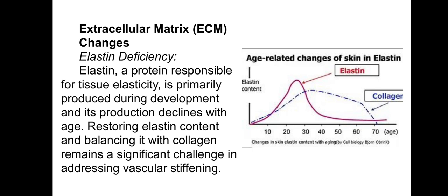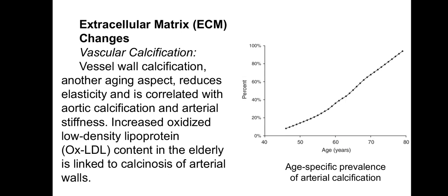This is important to reduce aging. Vascular calcification — another aging aspect — reduces elasticity and is correlated with aortic calcification and arterial stiffness. Increased oxidized low-density lipoprotein content in the elderly is linked to calcinosis of the arterial wall. We can see how calcification is increasing after about age 45 to 50, and eventually our arteries become like bone tubes.